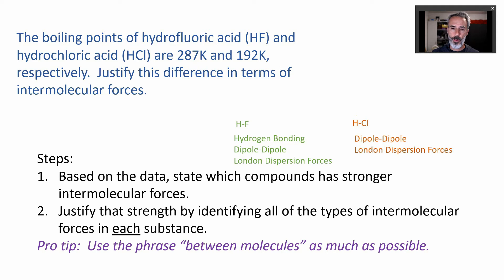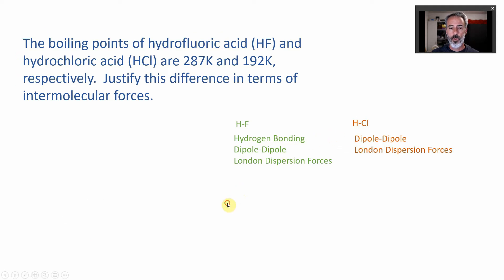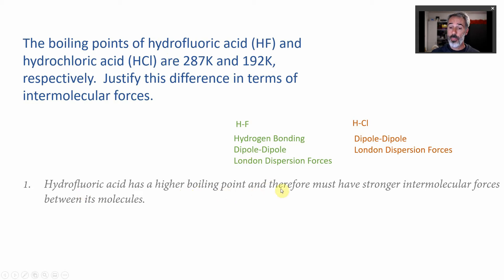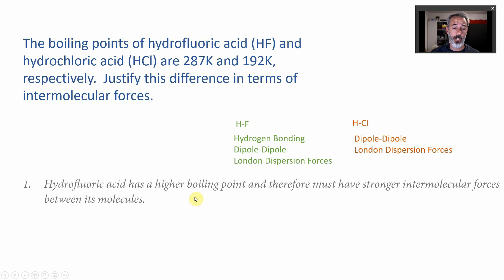Now we wrap it up into an argument. First, don't get into what kind of forces they have right away — write it out in sentence form. Step one: 'Hydrofluoric acid has a higher boiling point' — cite the data — 'therefore must have stronger intermolecular forces.' Cite the data they gave you. Just saying which one must have stronger intermolecular forces will give you credit a lot of the time.